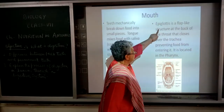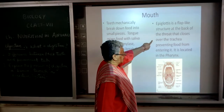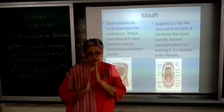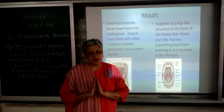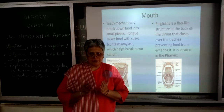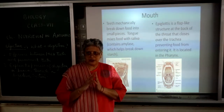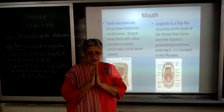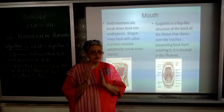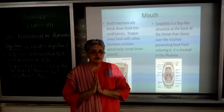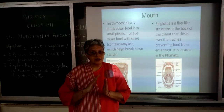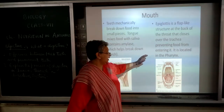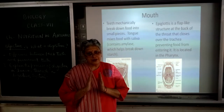Then there is the epiglottis - a flap-like structure at the back of the throat that closes over the trachea preventing food from entering it. It is located in the pharynx. We have two pipes: the food pipe and the wind pipe, running parallel to each other. Sometimes when you lie down while eating, or talk while eating, the chances of food going into the wind pipe increase.